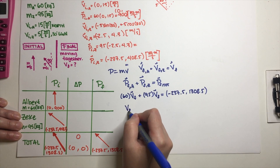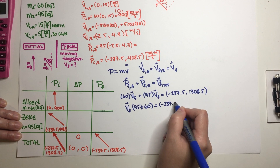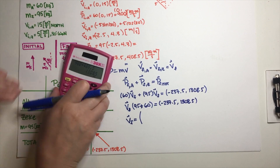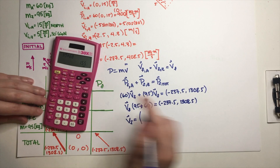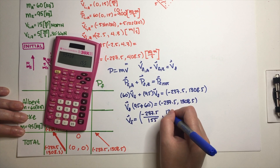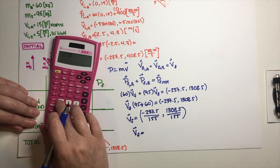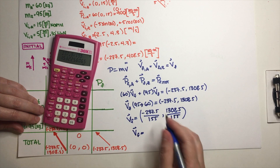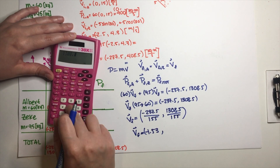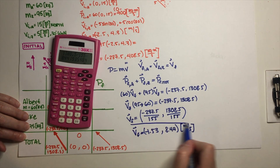Now I factor out v_final: (95 + 60) × v_final = (−237.5, 1308.5), so 155 × v_final = (−237.5, 1308.5). Solving for v_final: the x-component is −237.5 ÷ 155 = −1.53, and the y-component is 1308.5 ÷ 155 = 8.44 meters per second. So v_final = (−1.53, 8.44) m/s. This is essentially our final answer in component form.